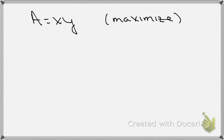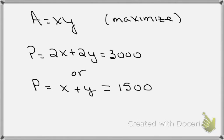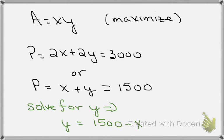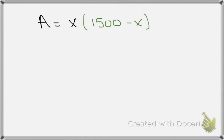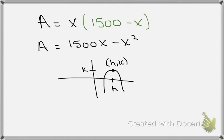We know that A equals x times y has to be maximized, and the perimeter equals 2x plus 2y which equals 3,000. Dividing everything by 2, we get x plus y equals 1,500. Solving for y, we get y equals 1,500 minus x. Substituting in, the area equals x times (1,500 minus x), which multiplied through gives area equals 1,500x minus x squared.